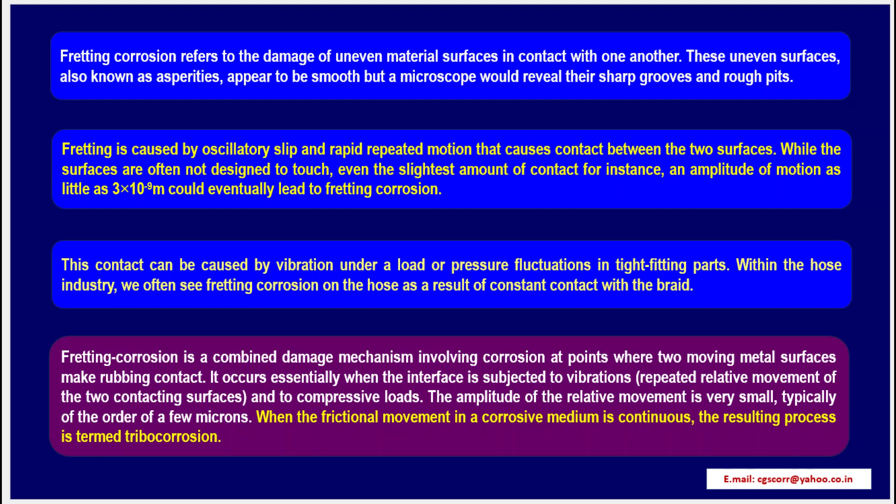Fretting is caused by oscillatory slip and rapid repeated motion that causes contact between two surfaces. When surfaces are often not designed to touch, even the slightest amount of contact — for instance, an amplitude of motion as little as 3×10⁻⁹ meters — could eventually lead to fretting corrosion. This contact can be caused by vibration under a load or pressure fluctuations in tight-fitting parts.